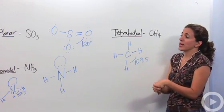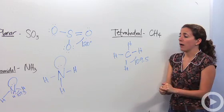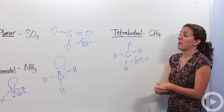These are the five main shapes that you're going to see. They're called VSEPR models, valence shell electron pair repulsion theory. This is what covalent compounds look like in 3D.